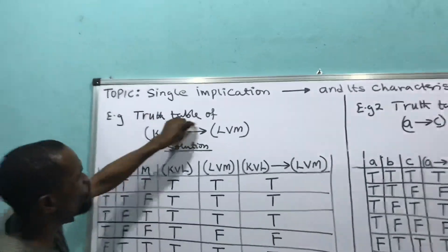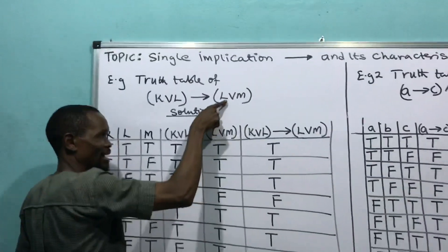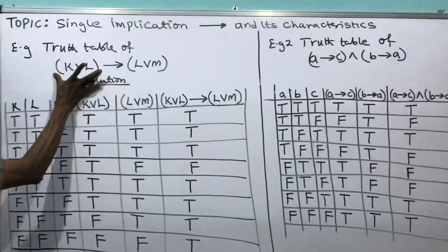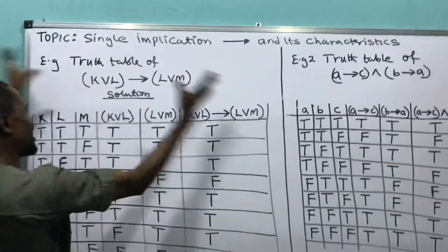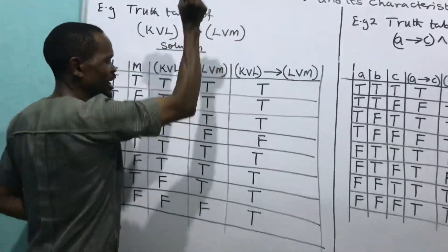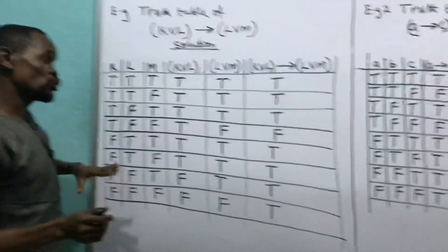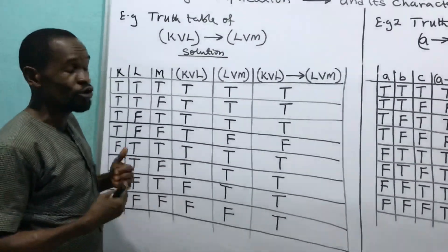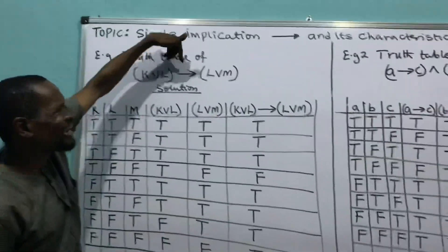Example: truth table of K or L, in brackets, implies L or M. How would I do this? I will do this part first and this part again separately. Then whatever I get from each side, I will now watch. This man will take the judgment last. I judge this first, then judge this separately, then what joins them is the final implication. I told you we are not interested in how the table is drawn — we are interested in the characteristics of the gates. We have six conjunctions and we are now on the third one.